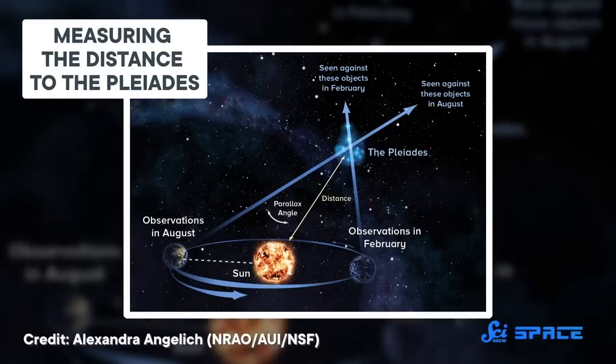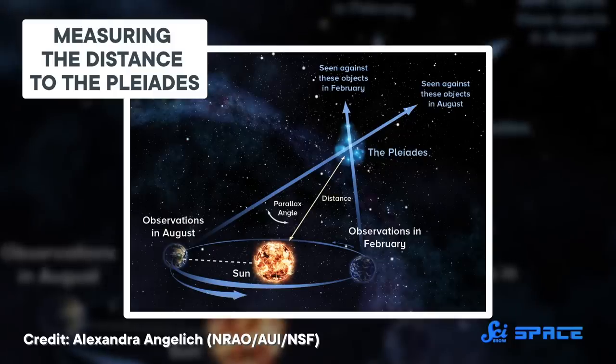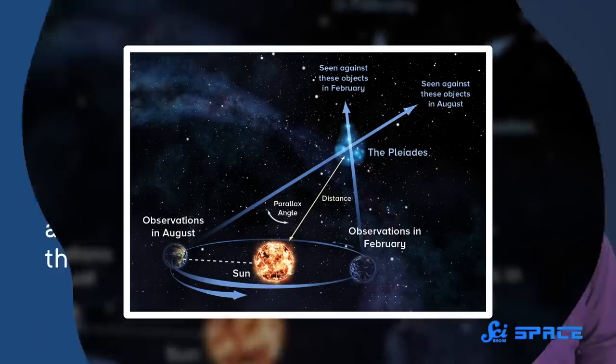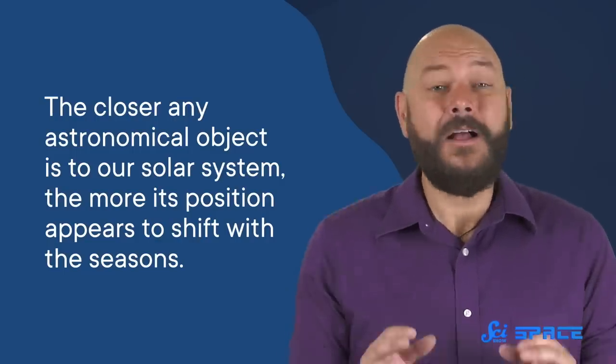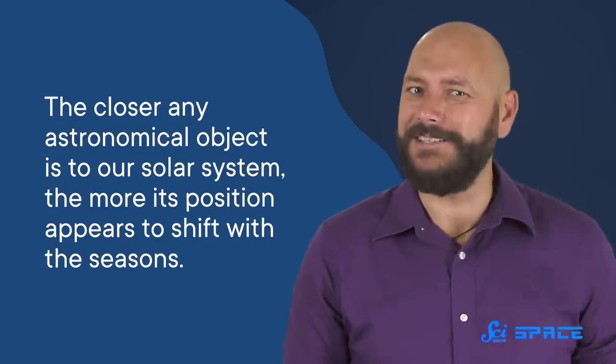The night sky changes ever so slightly because our perspective changes. For instance, the stars making up the famous Pleiades cluster appear among one group of stars during winter, but in the summer, they appear among a different group. And the closer any astronomical object is to our solar system, the more its position appears to shift with the seasons.